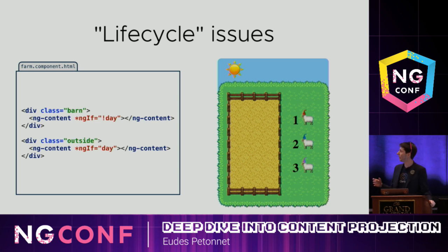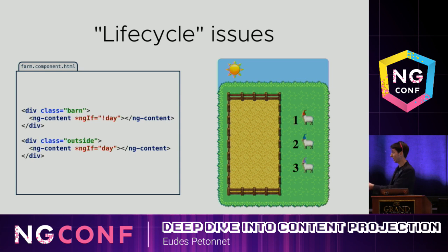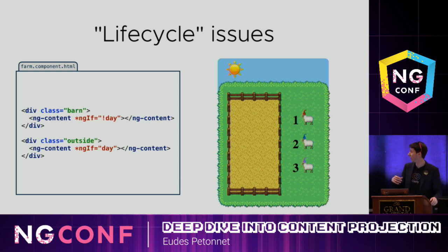What happened? It always comes back to the same thing: ng-content is basic and happens at build time. When we project our sheep, at build time Angular sees the first ng-content in the barn, then sees the second one outside and assigns the sheep there. So at build time they end up in the second ng-content. Then night comes — they're still inside that second ng-content even though it's hidden by ng-if, so they never move back to the first ng-content. It happened at build time and they matched to the second one, so they stay there forever.